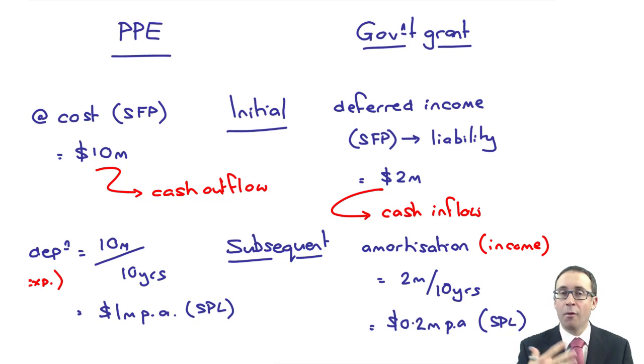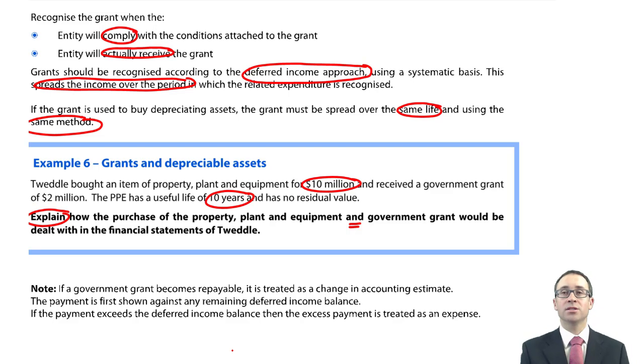You know, it is a primary financial statement. So if the question asks you to discuss or explain the accounting treatment in the financial statement, try not to limit it to just the statement of financial position and the statement of profits or loss. Throw in some cash flow. Throw in maybe some statements of changes in equity. Brilliant. If you can do that, you're well on the way to success.